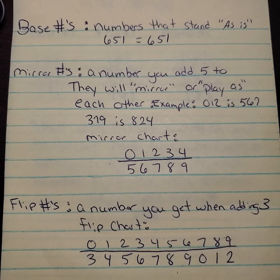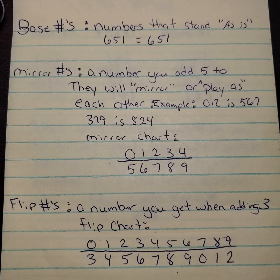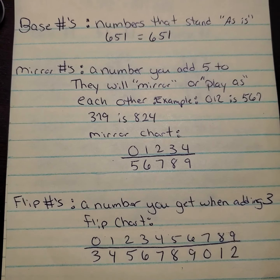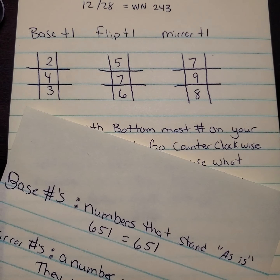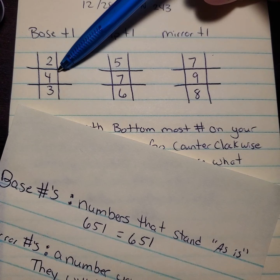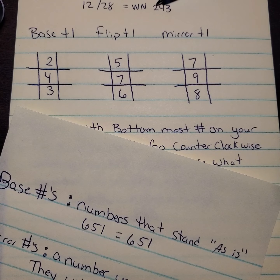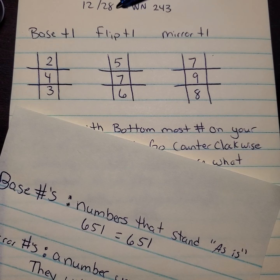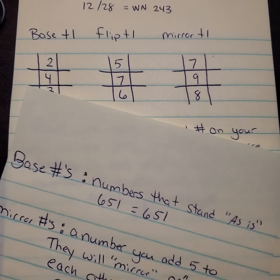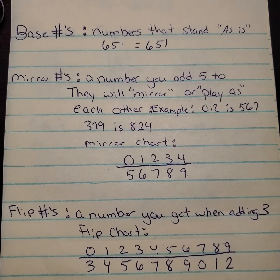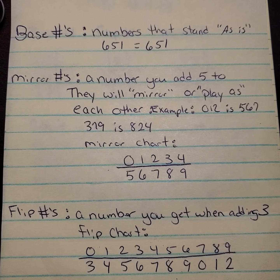A base number is pretty much just what it is — it stands as is. So if somebody says they've got a 651 as the winning number tonight, your base number is 651. In this case, the base number, as you see here, is 243, which was the winning number for the date of December 28th here in the state of Mississippi. That would be what your base number is.